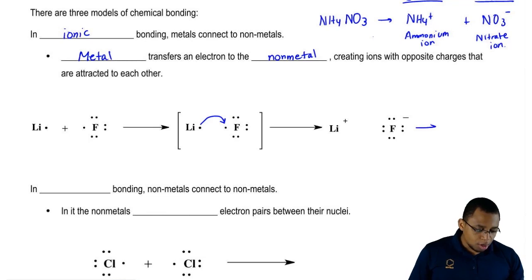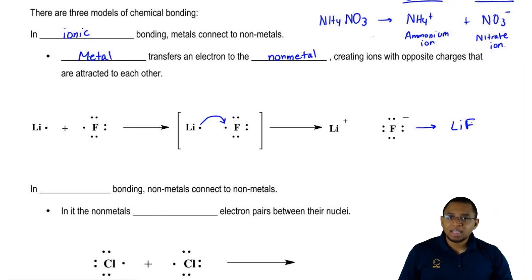Their opposite charges is what causes them and forces them to combine together to give us lithium fluoride. This is the image that you have to have in your head when you're dealing with ionic bonding. Ionic bonding is just bonding between a positive ion and a negative ion.